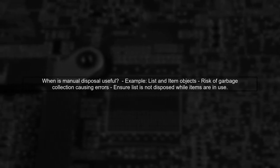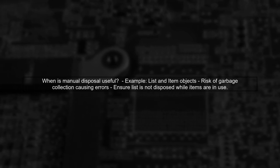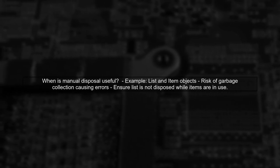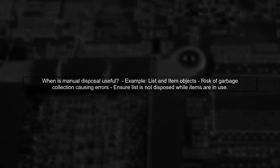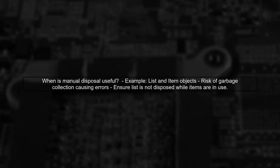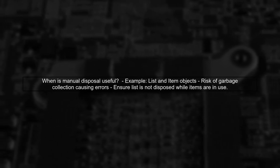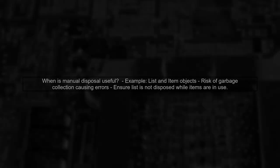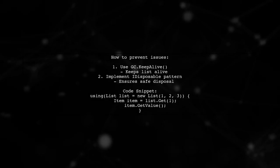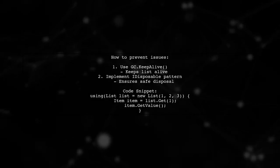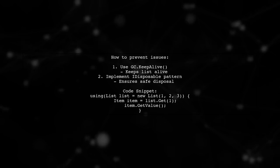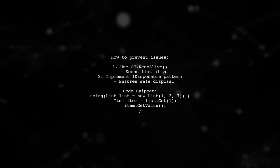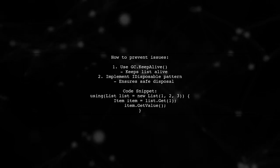There are situations where manual disposal can be useful, especially when dealing with lists and their items. For example, if a list is garbage collected while its items are still in use, it can lead to errors. To prevent this, you can use GC.KeepAlive to keep the list alive, or implement the IDisposable pattern for deterministic disposal. This ensures safe and clear usage of unmanaged objects.